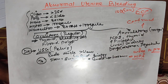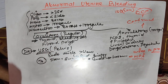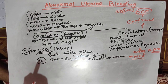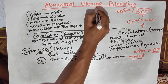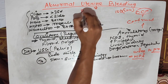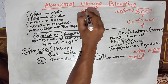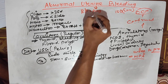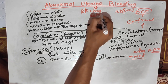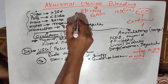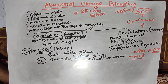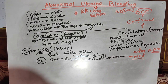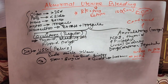One important point: in any case of abnormal uterine bleeding, we should always rule out pregnancy and ectopic pregnancy. This is a very high-yield clinical point — always look for pregnancy and ectopic pregnancy in case of abnormal uterine bleeding.